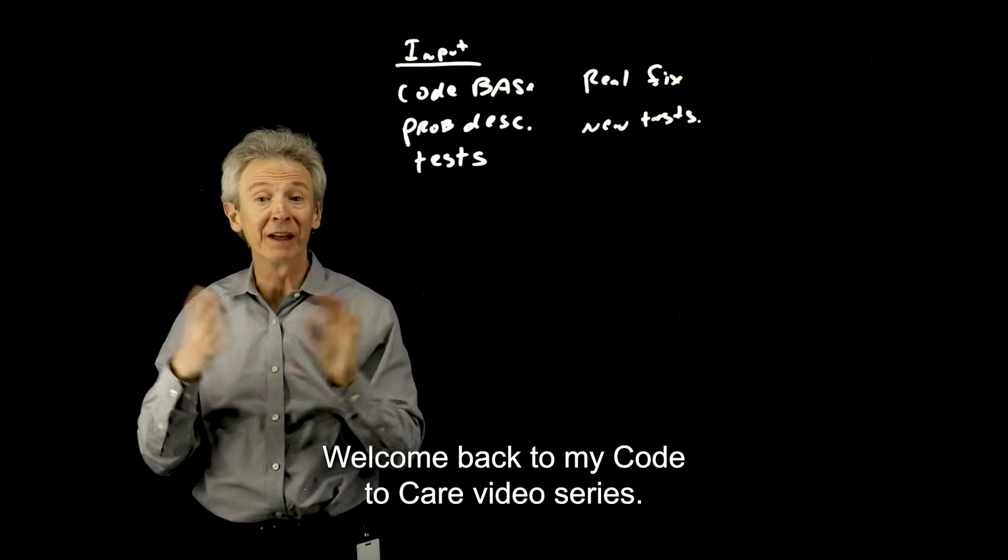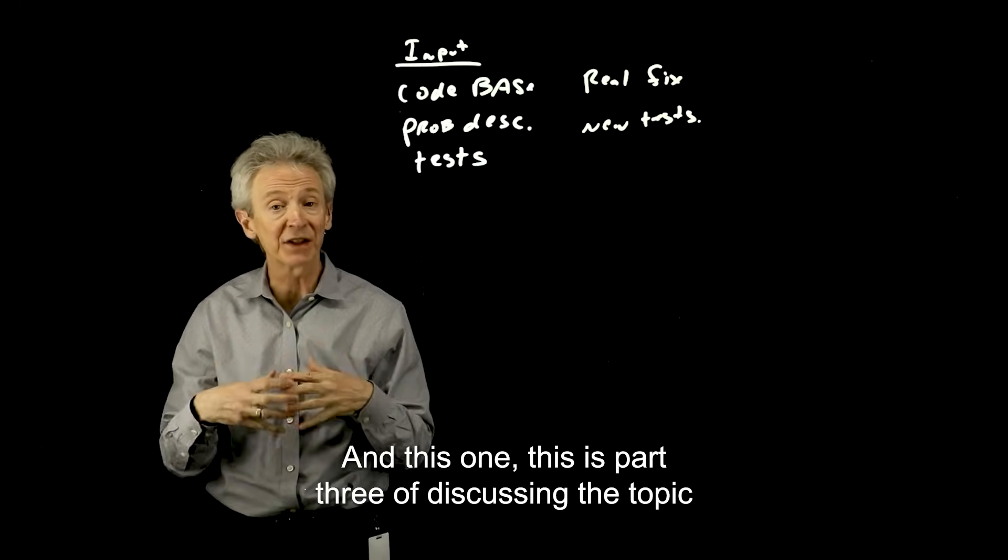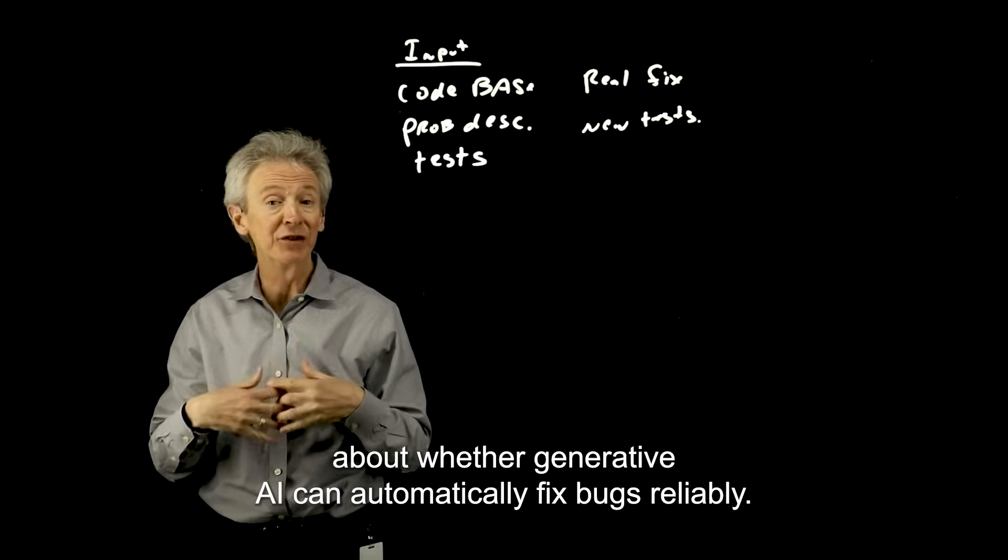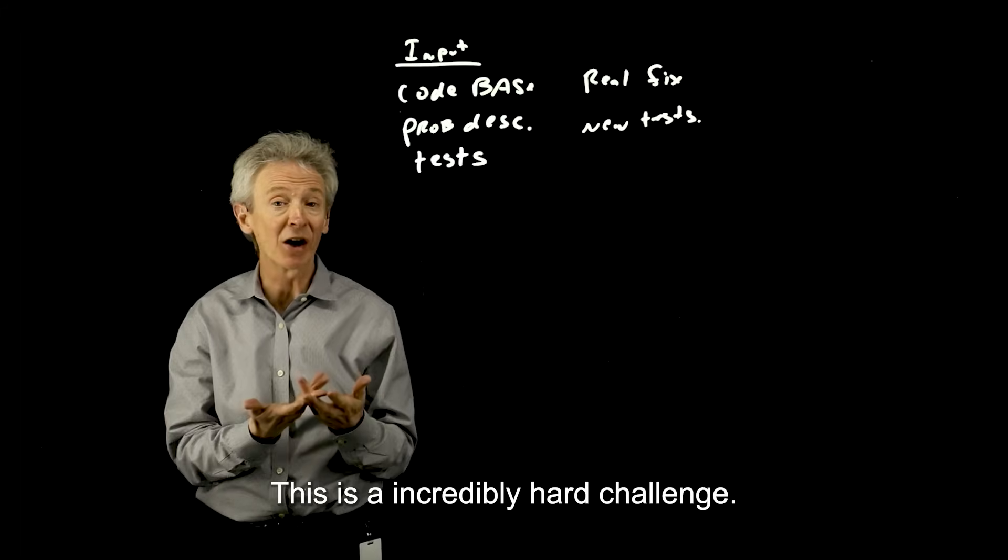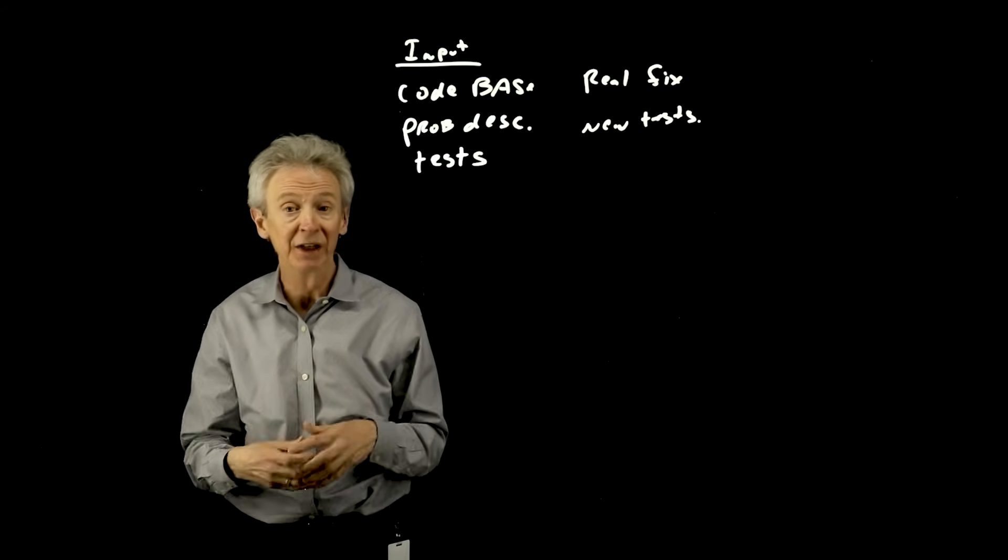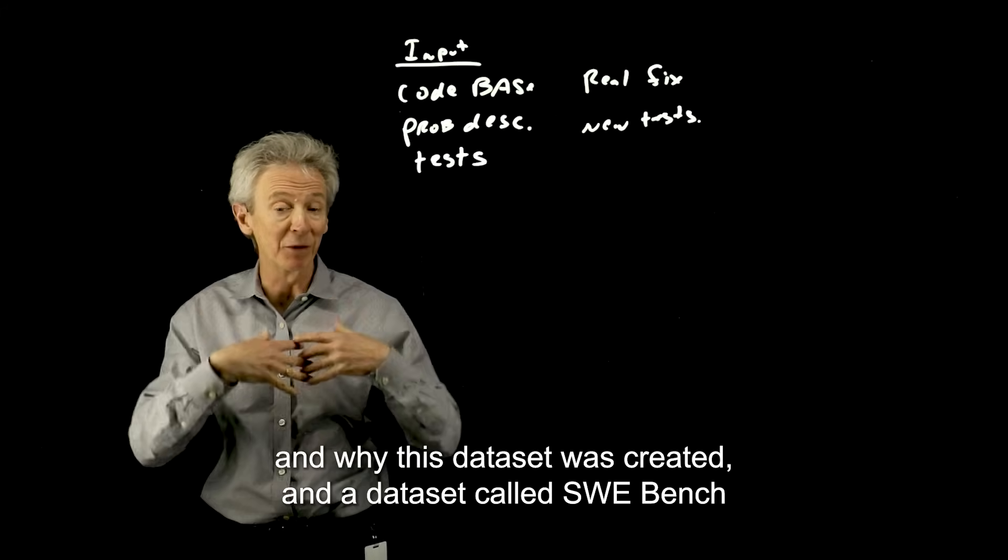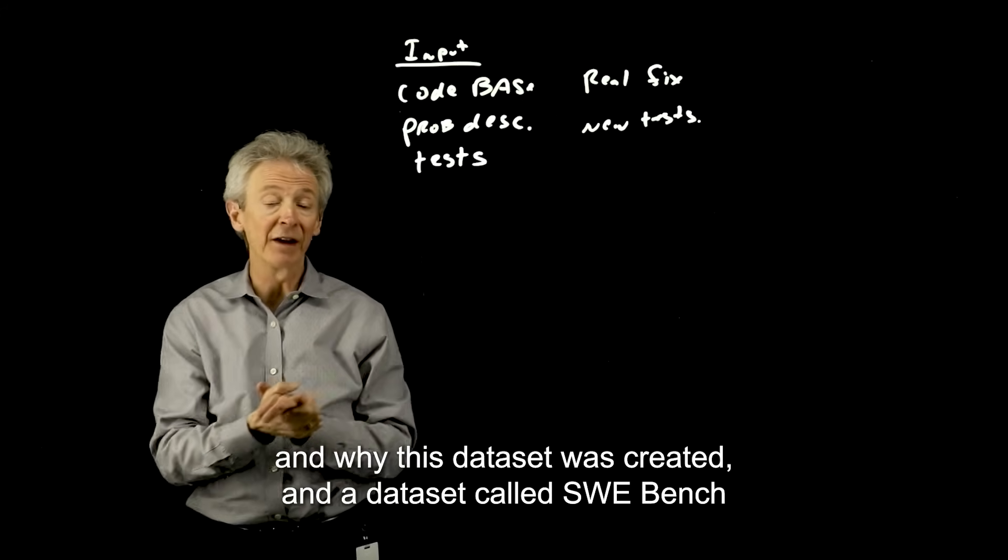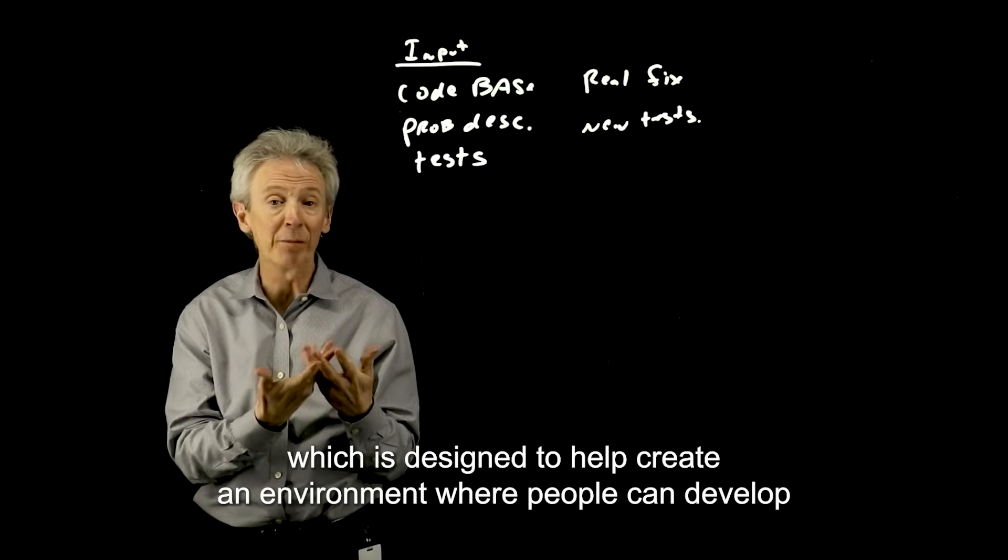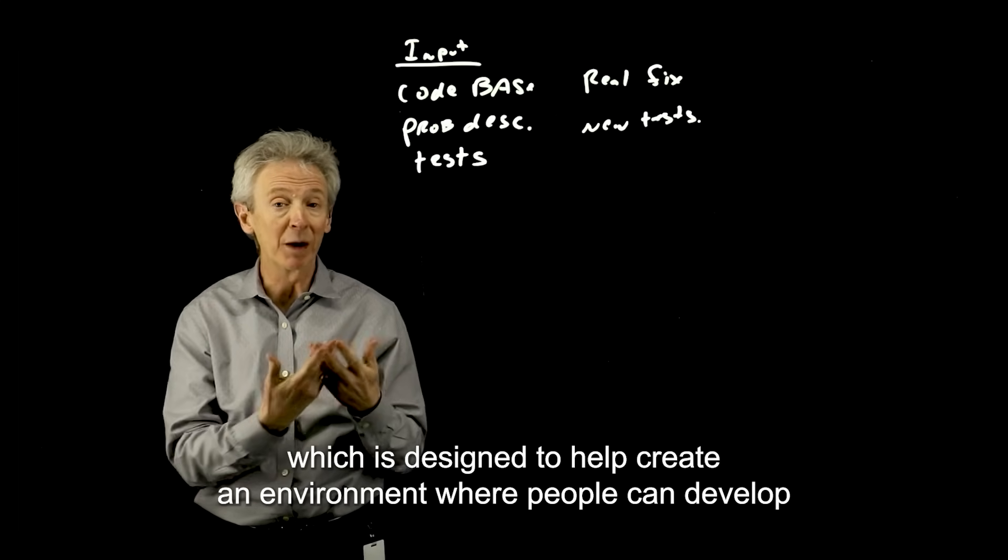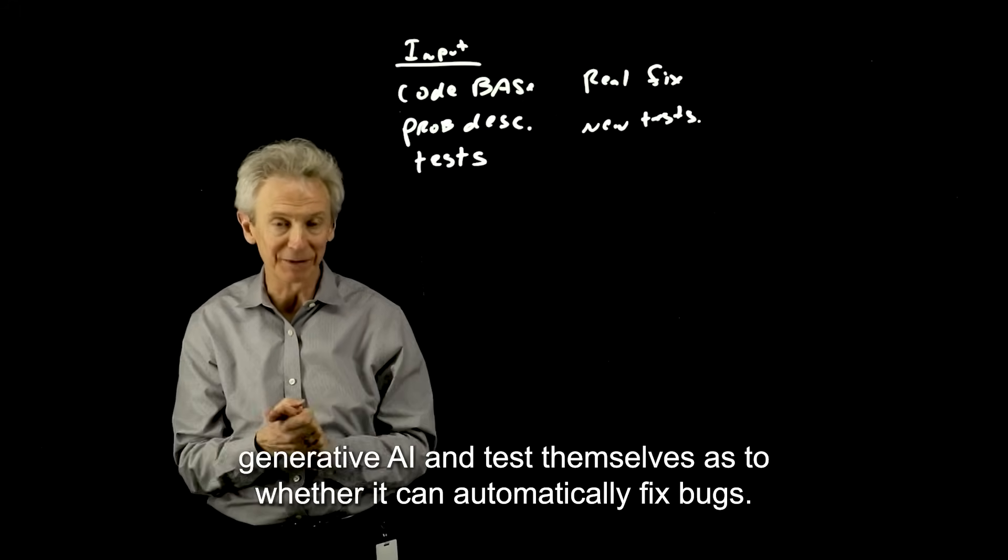Hello, everyone. Welcome back to my Code to Care video series. In this one, this is part three of discussing the topic about whether generative AI can automatically fix bugs reliably. This is an incredibly hard challenge. I talked in the prior videos about how difficult it is and why this data set was created, a data set called SWE Bench, which is designed to help create an environment where people can develop generative AI and test themselves as to whether it can automatically fix bugs.